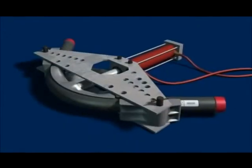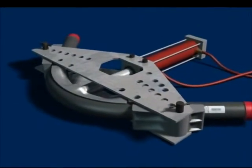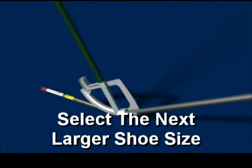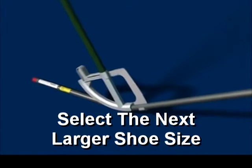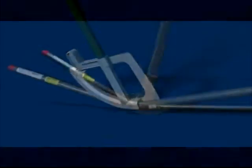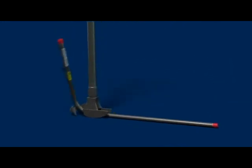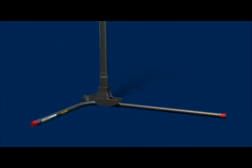PlastiBond coated conduit can be bent with conventional bending equipment. To accommodate the PVC coating when using a hand bender, always select the next larger size shoe. Use a PlastiBond hickey to reduce the possibility of damage to the conduit coating when making sharp bends, saddles or offsets.